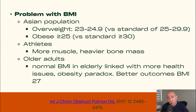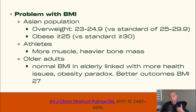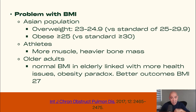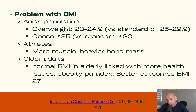BMI is not a perfect marker — there are many issues. For example, if you are of Asian descent, overweight actually starts much earlier. A BMI of 23 to 25 is already overweight, meaning if you wait until the standard range of 25 to 29, you may already be in the obese range with much higher risk of diabetes and other comorbidities. Athletes are another challenge, since they may have far more muscle and heavier bones, making them look obese when they're actually far fitter and healthier.